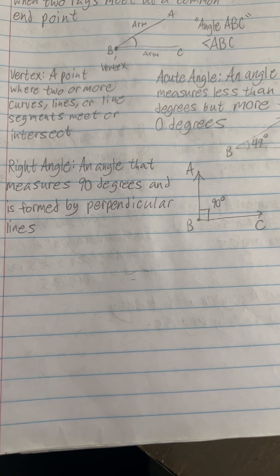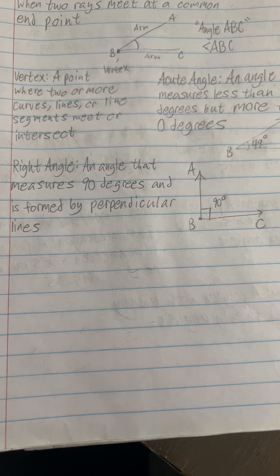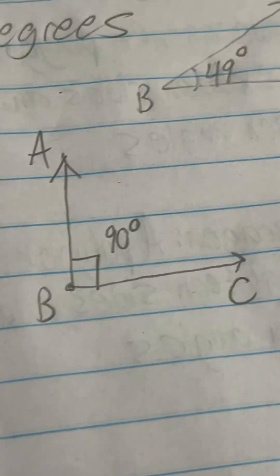A right angle is an angle that measures 90 degrees and is formed by perpendicular lines. The square indicates 90 degrees.